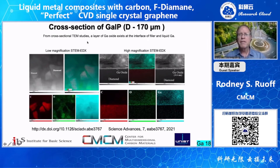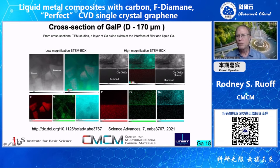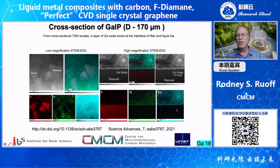We have cross-sectional TEM, and from STEM EDX we find that the thin layer of gallium oxide is observable between the large diamond particles. We prepared these samples by the standard SEM-FIB technique to generate the cross-section. You can see carbon present where the diamond is, very little oxygen at the diamond, and gallium present. The TEM samples were prepared with the gallium solidified for imaging.